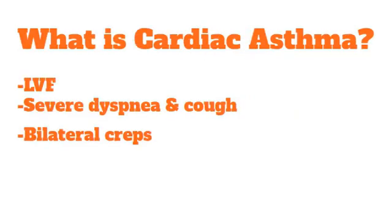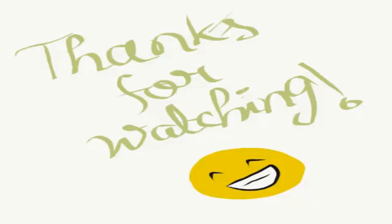Cardiac asthma is left ventricular failure in which the patient usually presents with sudden severe dyspnea and cough with profuse mucoid expectoration. Bilateral basal crepts are found, but no ronchi or wheeze are present.